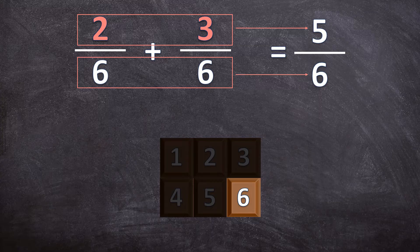Remember, it doesn't matter if you add, subtract, multiply, or divide fractions — when you have your answer, you always need to make sure it's in its simplest form. You always need to simplify the answer if it can be simplified. But in this case, 5 over 6 can't be simplified, so that is our final answer.